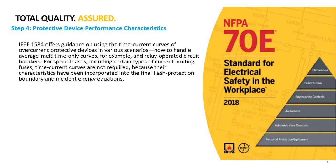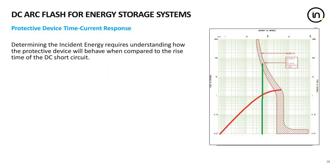IEEE 1584 provides all sorts of guidance for protective device protection and coordination. The important thing is that engineers understand how protective devices are going to perform. The red line on the time current curve shows what typically happens in a DC system during an arcing event — it's an exponential function. The green line shows how an AC system would perform. Looking at the time current curve, it takes quite some time for the circuit breaker to respond to a DC event compared to an AC event.